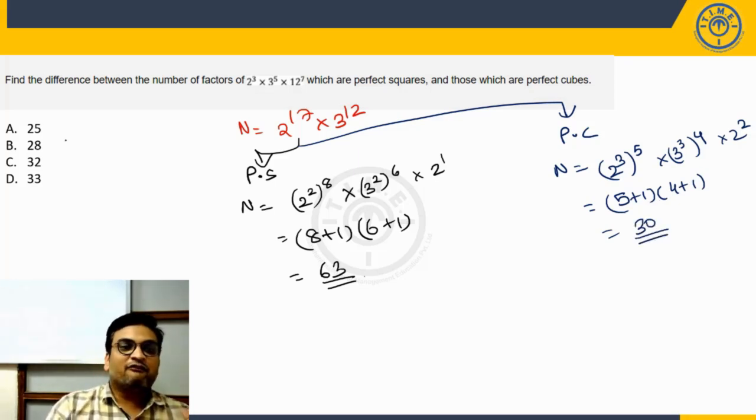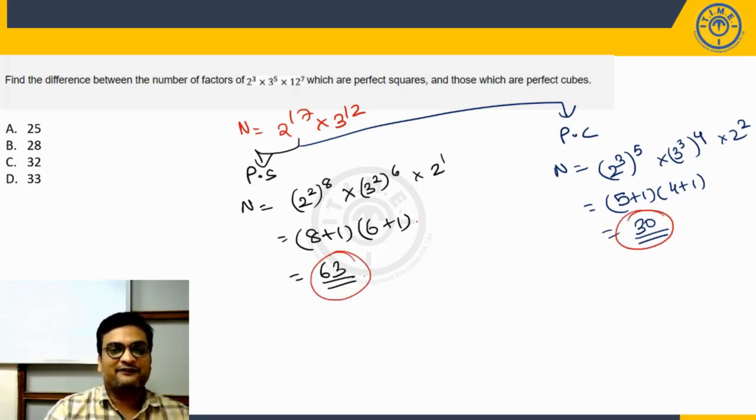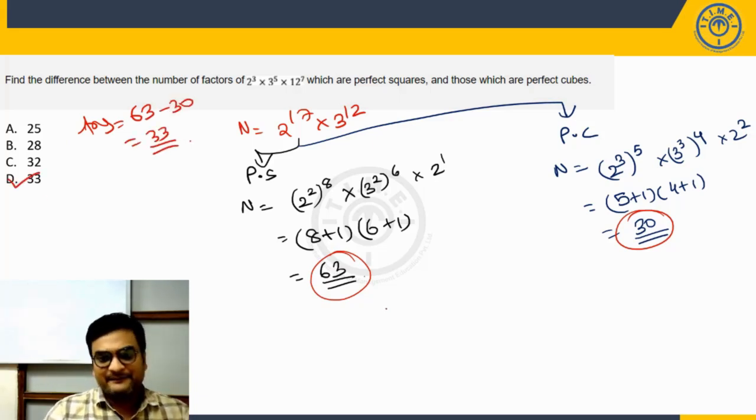Now what was the question? Find the difference between the number of factors of this number which are perfect squares and which are perfect cubes. So perfect square there are 63 factors, perfect cube there are 30 factors, thus my answer is going to be 63 minus 30 which is going to be 33. Option choice D is going to be the correct answer, all right.